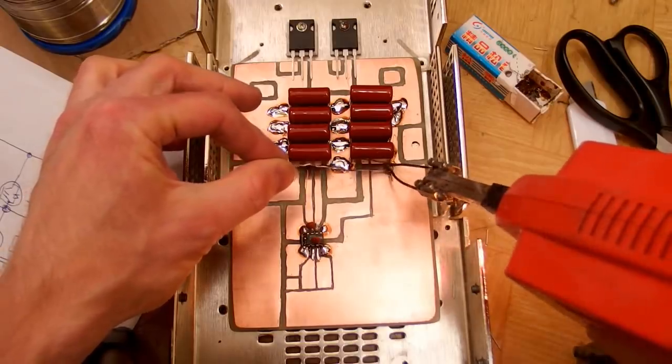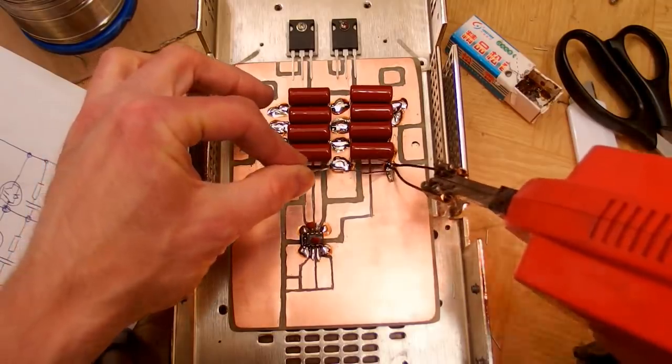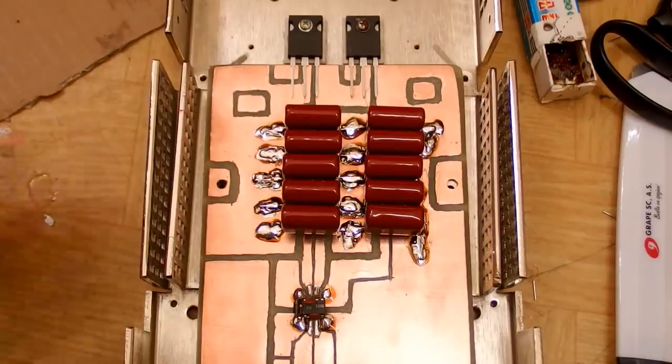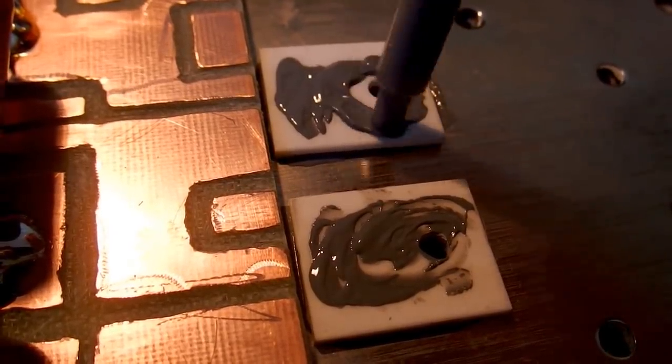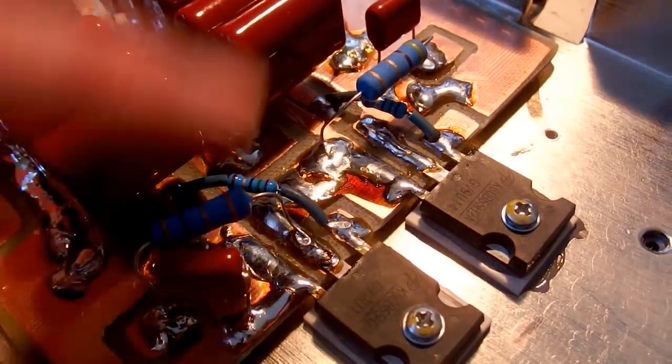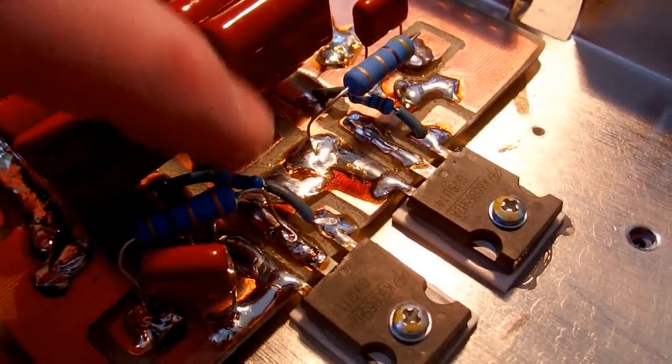And now of course putting the voltage divider capacitors in place, that's it. Some heatsink compound under the transistors of course, and the snubber networks and the gate resistors.